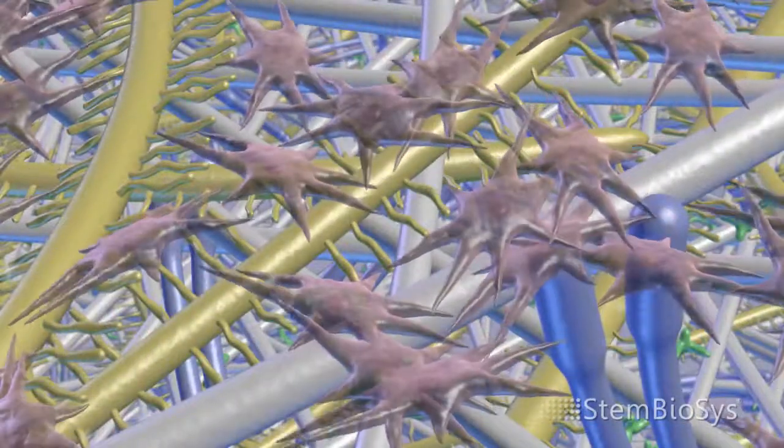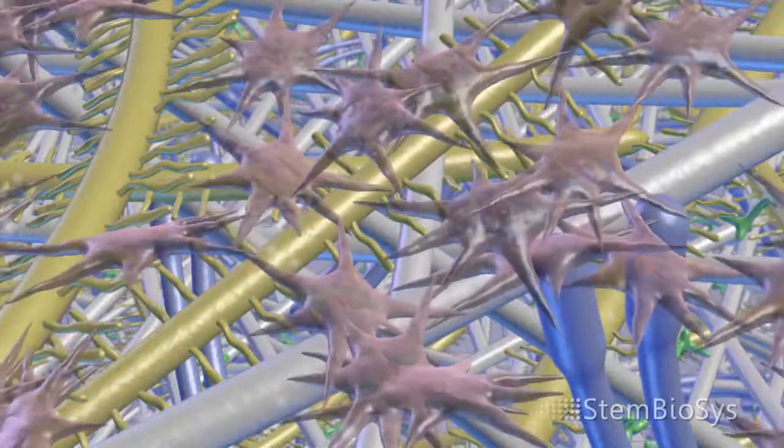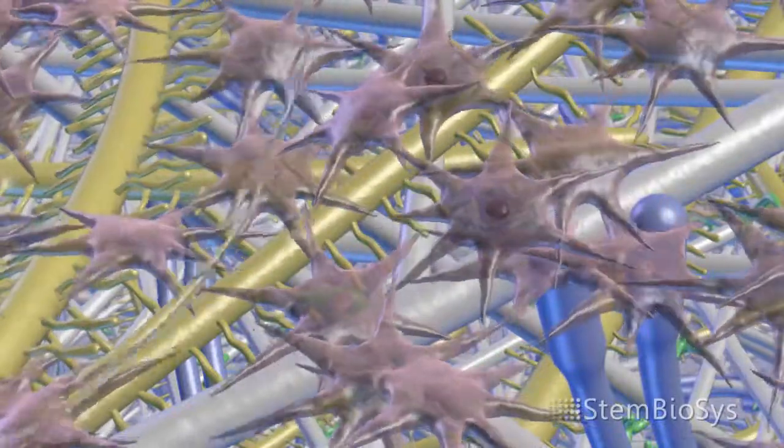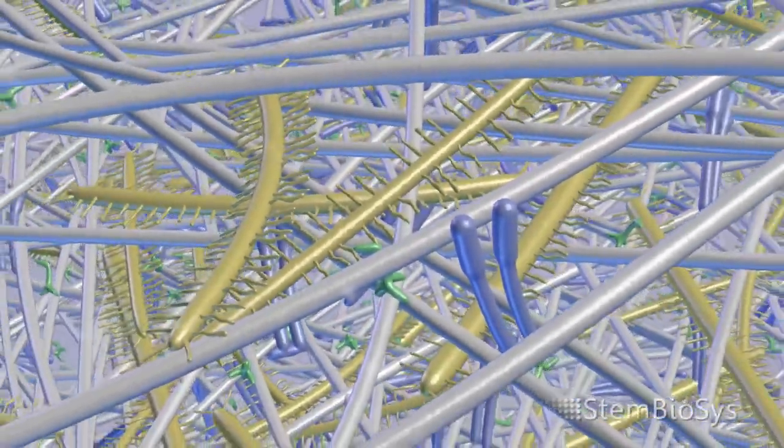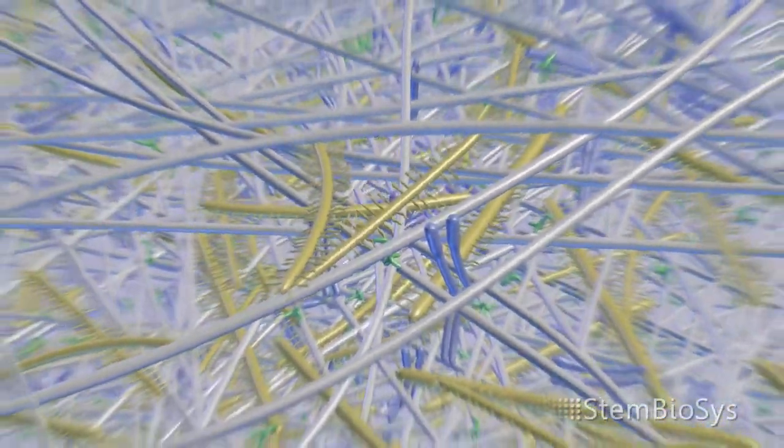Following production of their extracellular matrix, the remaining bone marrow stromal cells are removed very gently, so as not to change the architecture or the biochemistry produced by the cells.